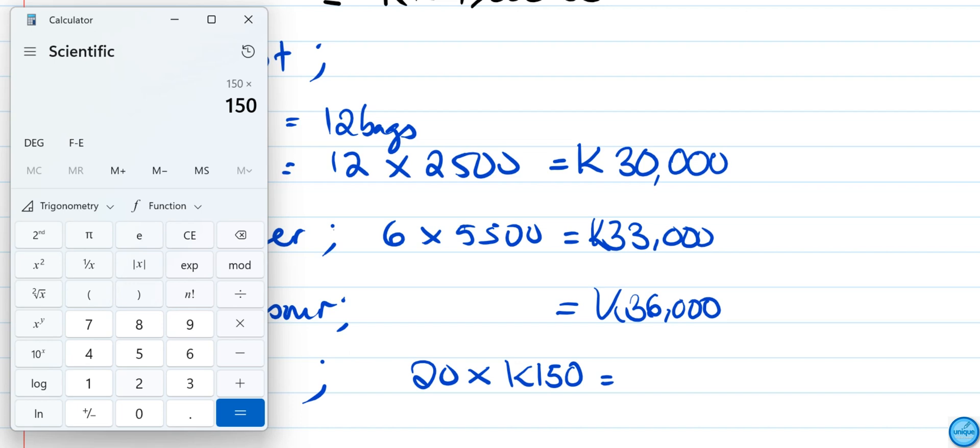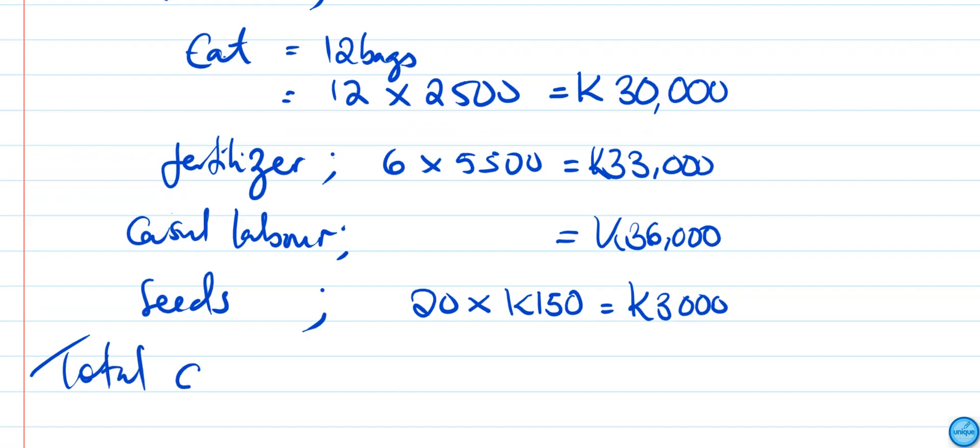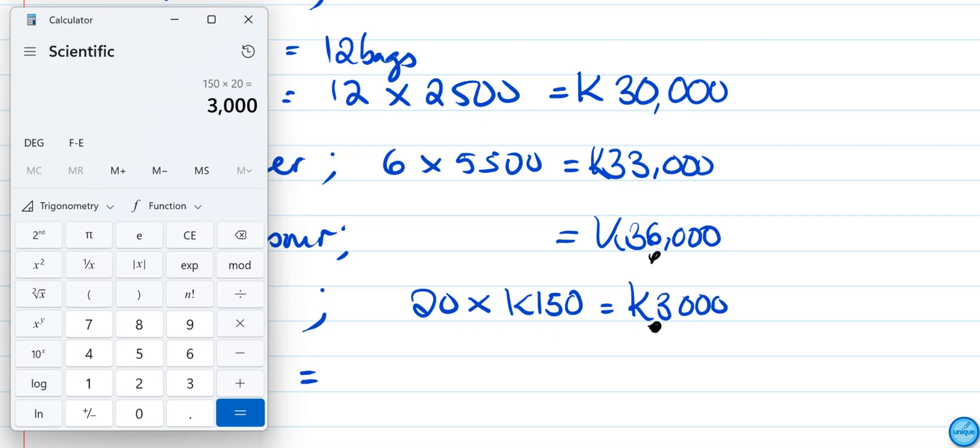Total cost will be the sum of all these. We have K30,000 plus K33,000, that's K63,000. Let's add K36,000. Then add K3,000. So total cost is K102,000.